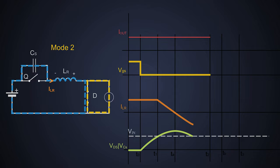As you can see, during this mode, that is the resonant stage, the direction of the current flowing to the resonant inductor changes. Finally, at time T2, the voltage across MOSFET reaches to zero because it is completely discharged.